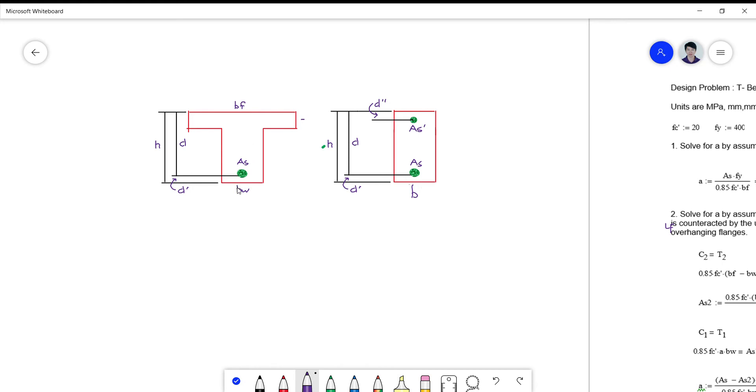Your T-section actually gets your shape from the beam itself, which is given by the width of the web here and the height h, plus a portion of the slab. This part here, which is normally called the flange, is actually a portion of the slab.